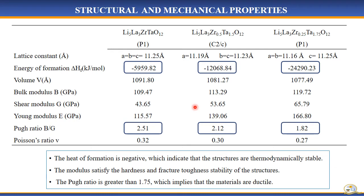The structural and mechanical property calculations were performed to evaluate the stability of the structures for their use as active solid state electrolytes. From the table, it shows that the lattice constant decreases with an increase in Tantalum concentration, because Tantalum has a lower ionic radius compared to zirconium. Also, the elastic moduli satisfy the hardness and fracture toughness stability requirements of electrolytes. The Pugh ratio is greater than 1.75, which indicates that the materials are ductile.